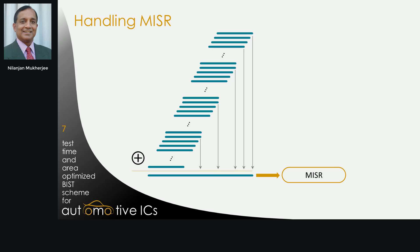The next challenge is to calculate the MISR signature for all these patterns, especially when they are distributed to numerous slaves. Fortunately, since MISR calculation is a linear process, each one of the slaves is responsible for calculation of the signatures for the parent and intermediate patterns. Once they are calculated, they are sent back to the master, where the final MISR signature is calculated based on the simple principle of superposition.